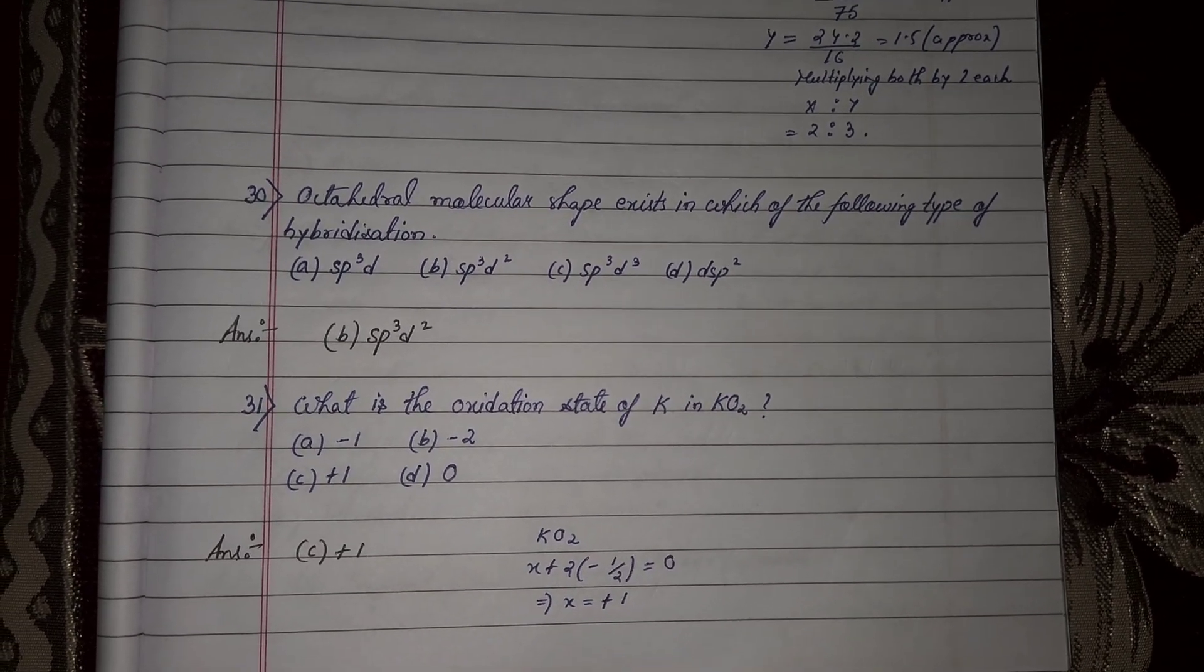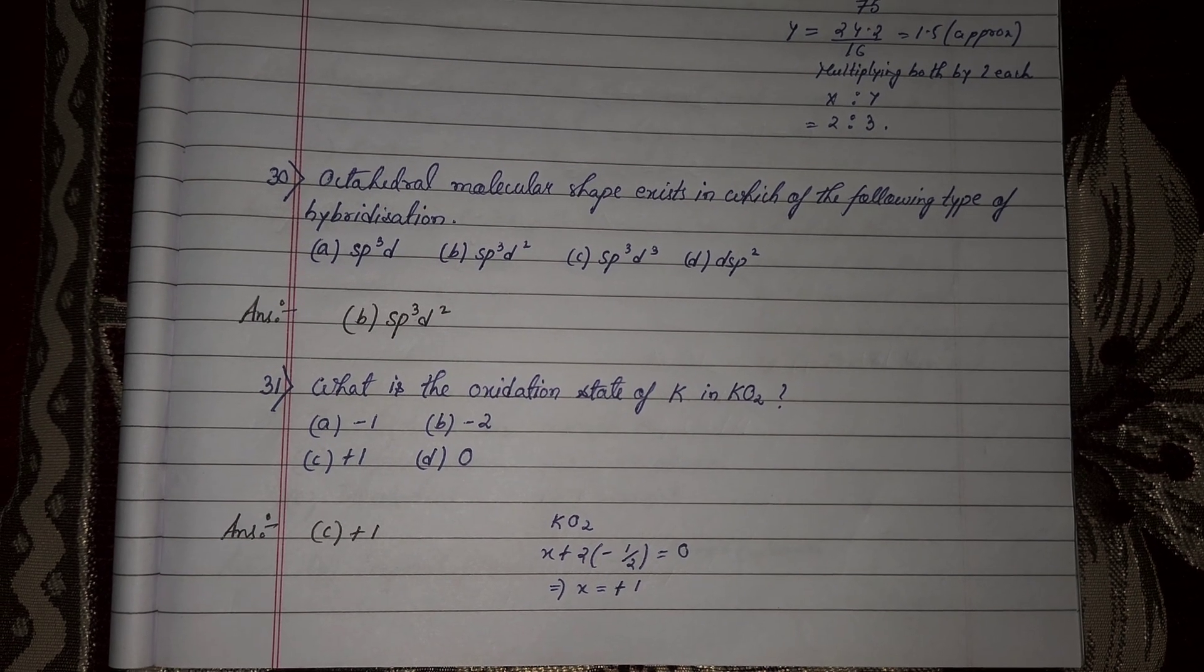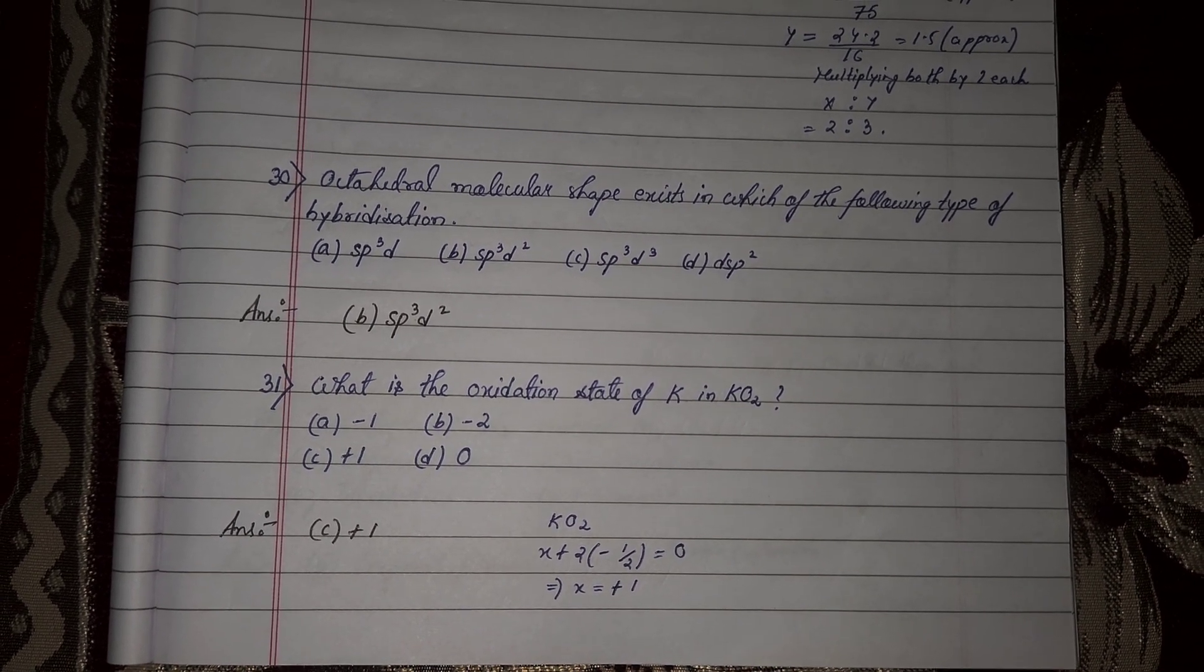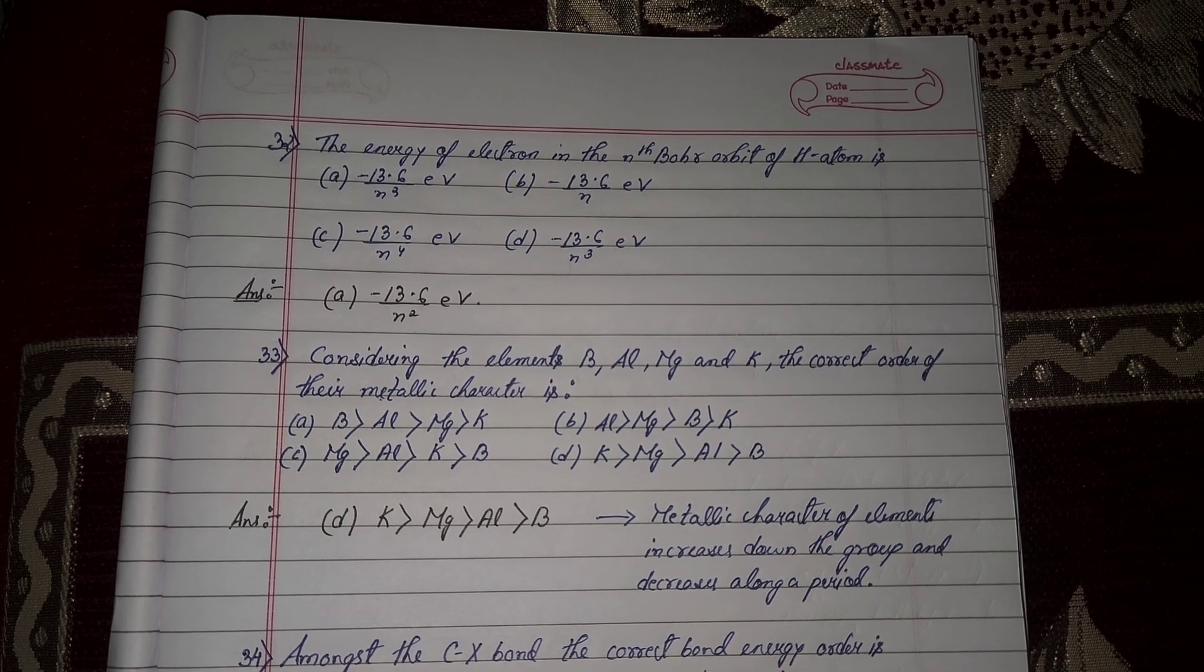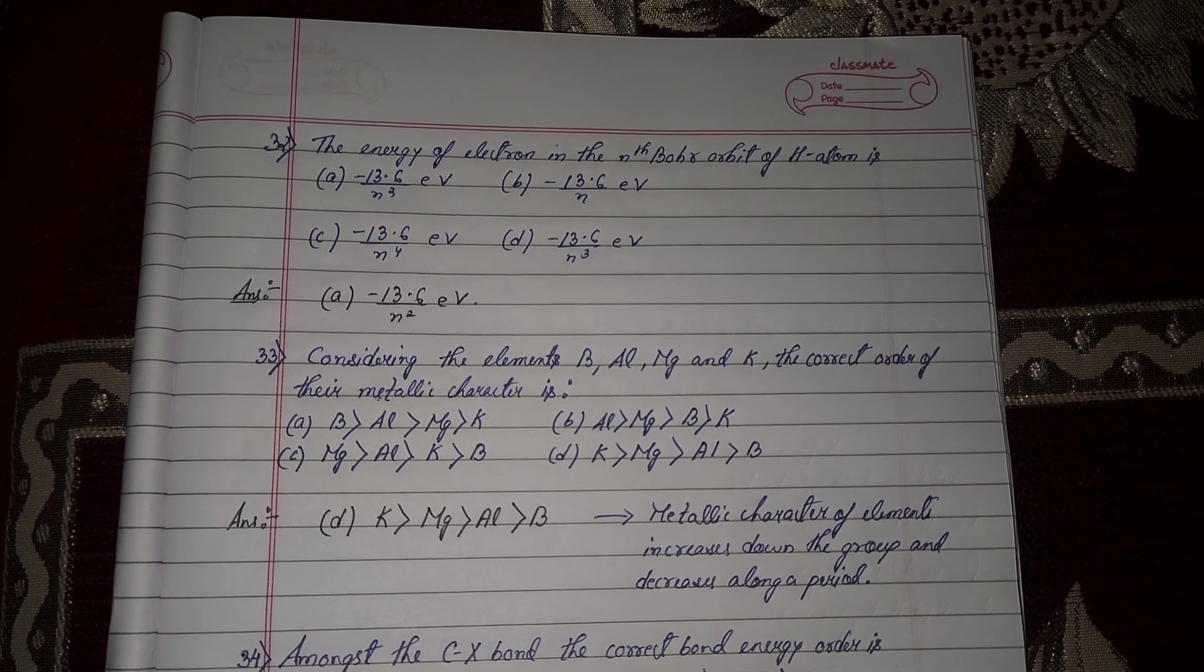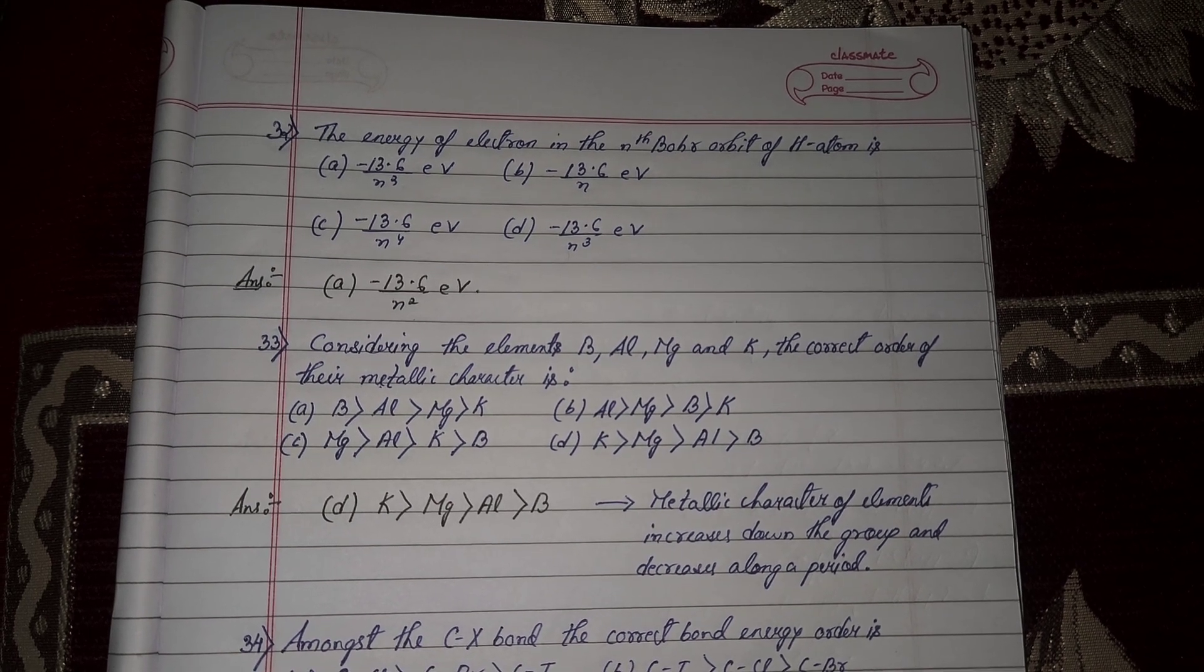Next question number 31, what is the oxidation state of K in KO2? It is plus 1. Next question number 32, the energy of electron in the nth Bohr orbit of hydrogen atom is option number A, minus 13.6 by N square electron volt.